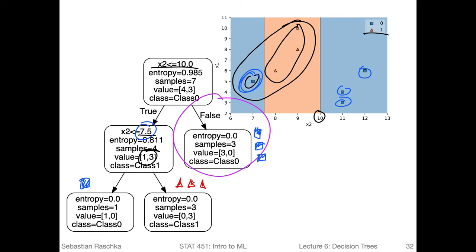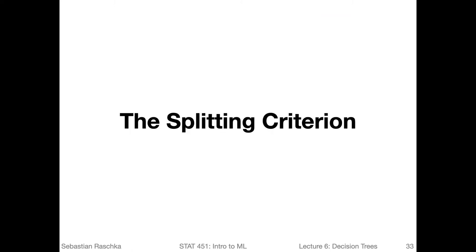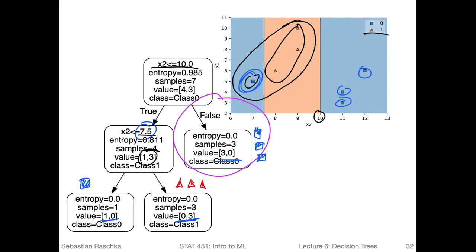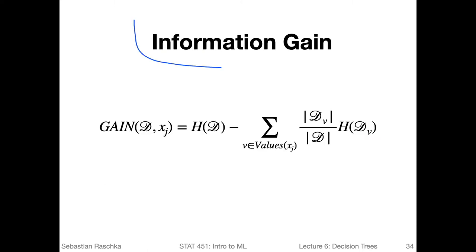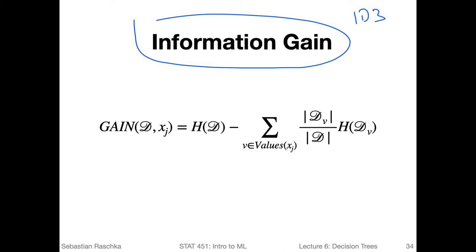One hundred percent training accuracy basically corresponds to having pure nodes — as you can see, all those nodes are pure. Now finally, let's talk about the splitting criteria and the criterion function we can use to evaluate a split. Previously we were just assuming a split is good by looking at it, but how do we measure it? It has something to do with entropy. Let's finally talk about information gain, which is a measure that allows us to assess how good a given feature is for splitting a certain node.